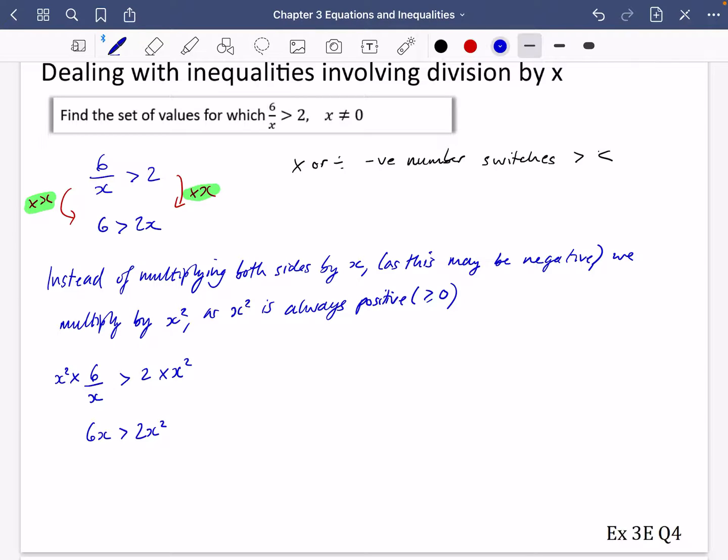Now this is a quadratic, so I'm going to put it all onto one side: 2x squared minus 6x is greater than 0. However you want to solve that quadratic, you can just go ahead and solve that. I can see what the answers are going to be easily, but I'm just going to use my equation solver, so the solutions are x equals 3 or x equals 0.